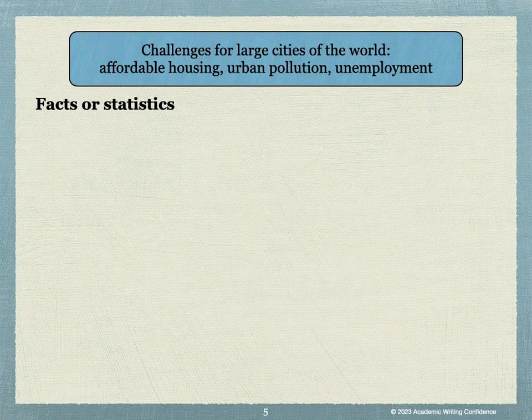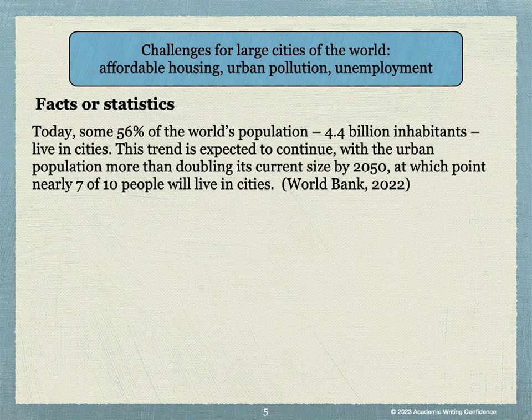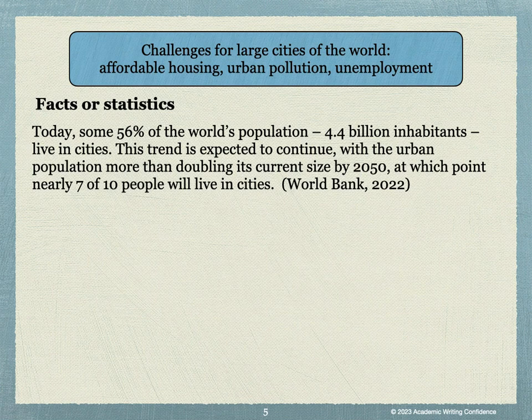For a hook that uses facts or statistics, you might write something like this: Today, some 56% of the world's population — 4.4 billion inhabitants — lives in cities. This trend is expected to continue, with the urban population more than doubling its current size by 2050, at which point nearly 7 of 10 people will live in cities. You can see that we have included a source for where we found this information — this is from the World Bank website, and this information is from 2022.